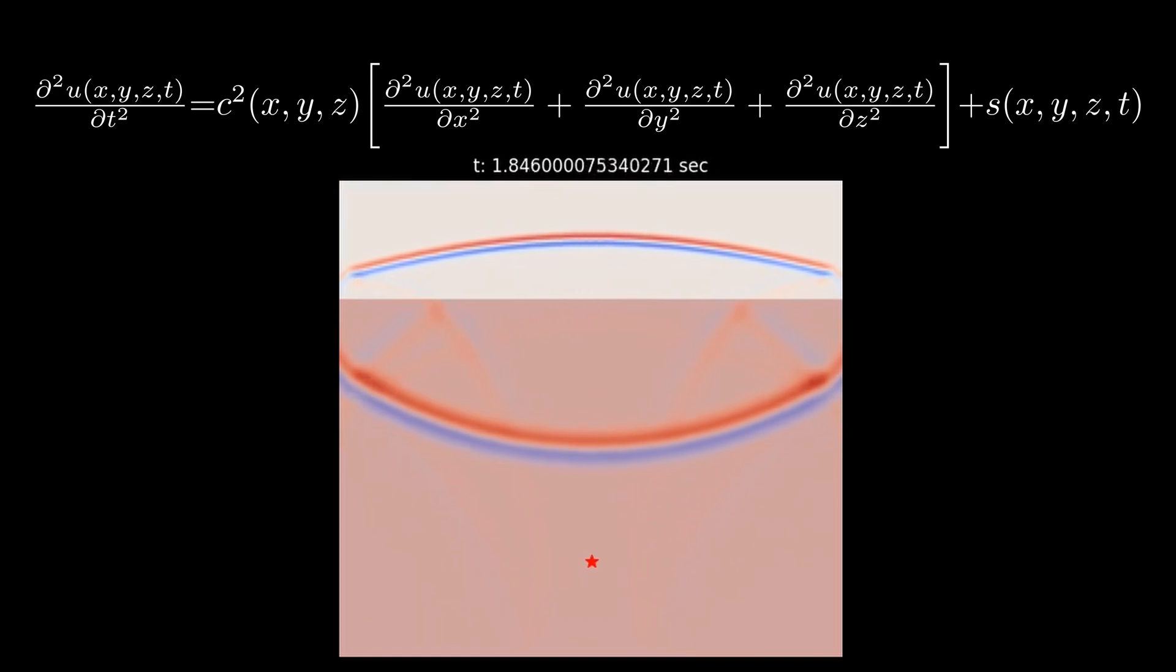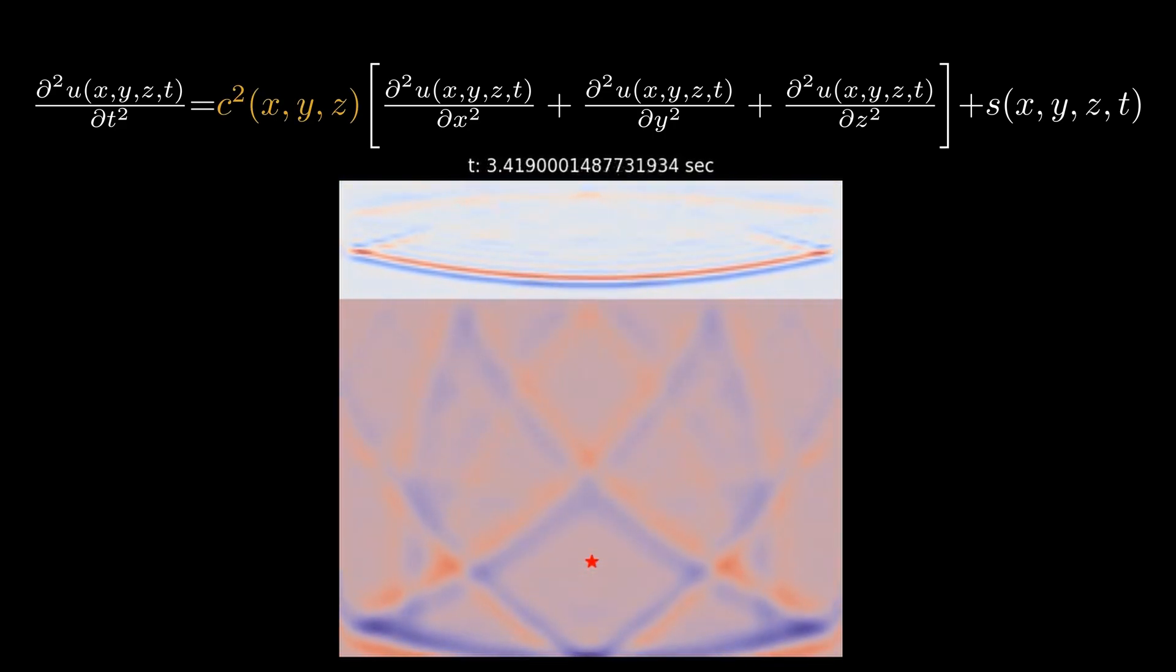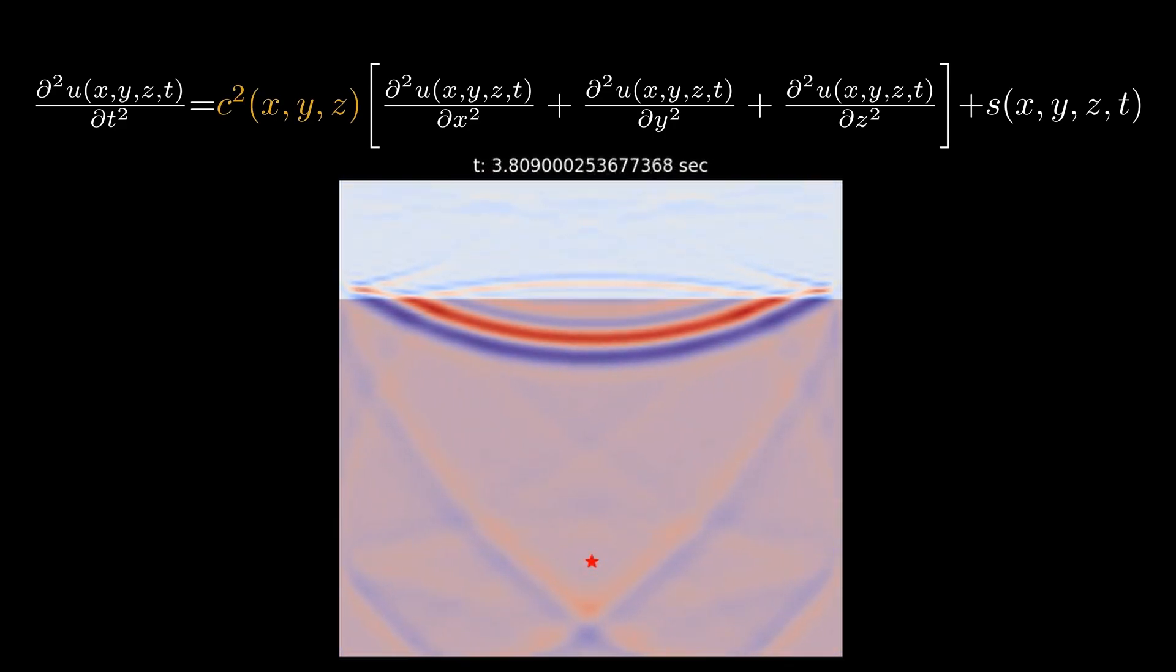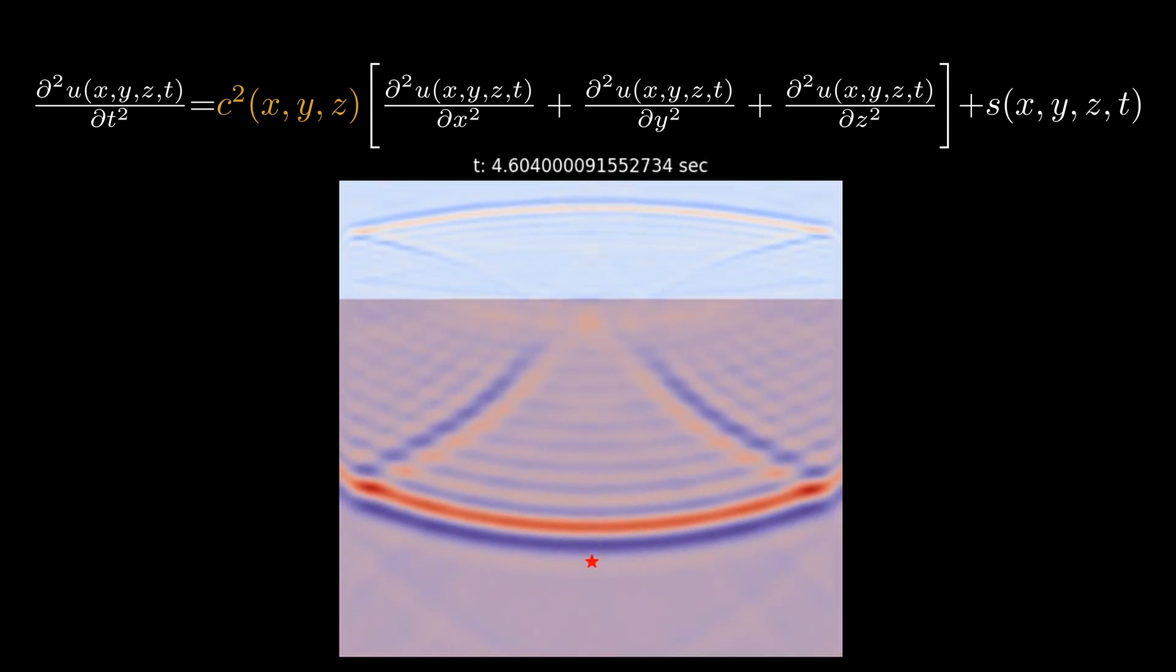the energy travels through the medium which is defined using the term C. This parameter represents the velocity of the wave in the medium. The higher the value, the faster will the wave propagate. You can see here that the wave is propagating much faster in the bottom layer compared to the top one.